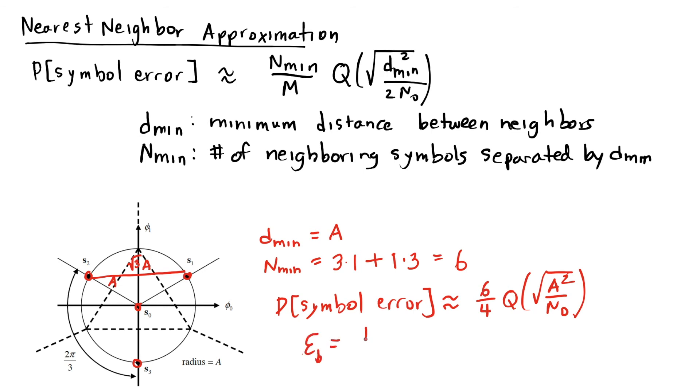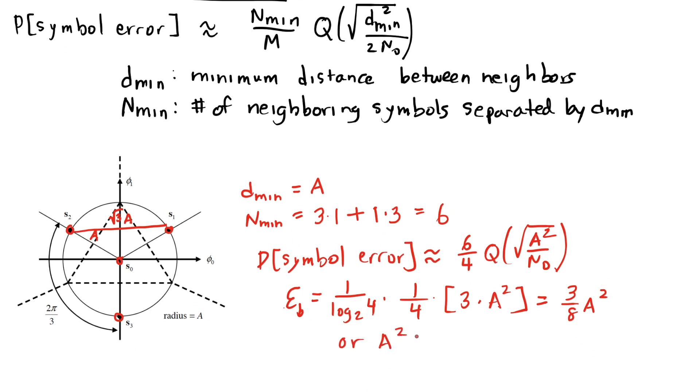and here the average energy per bit is 1 over log base 2 of 4 times 1 over 4 times the total energy of the 4 symbols, and here that's 3 times a squared.